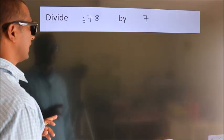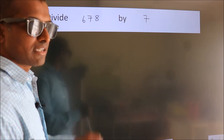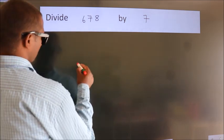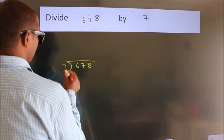Divide 678 by 7. To do this division, we should frame it in this way. 678 here, 7 here.